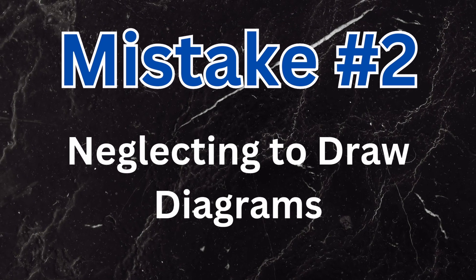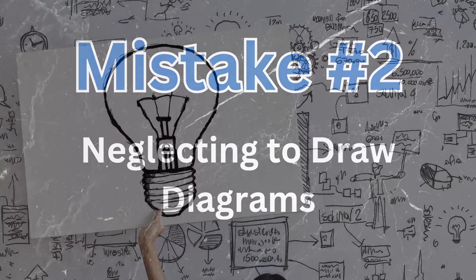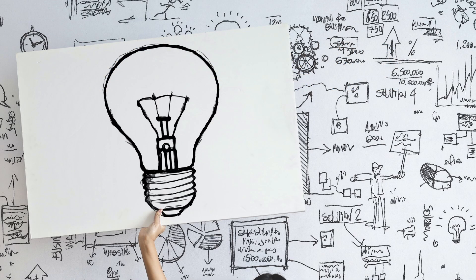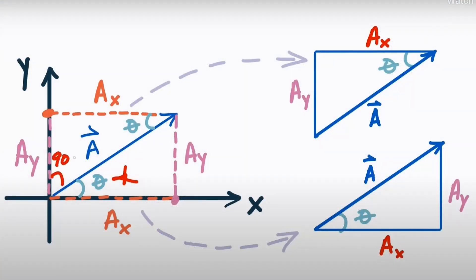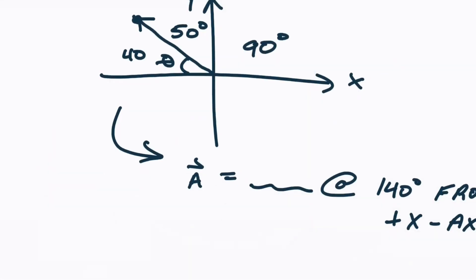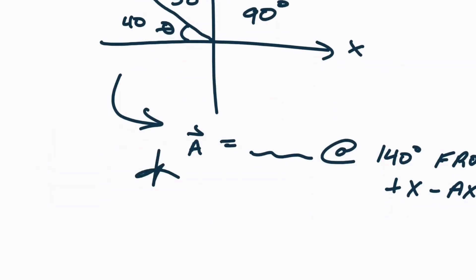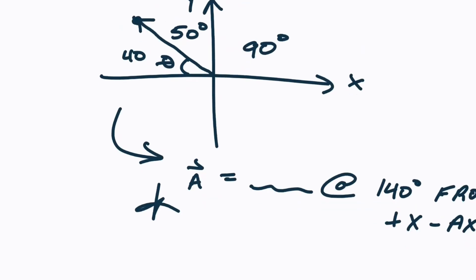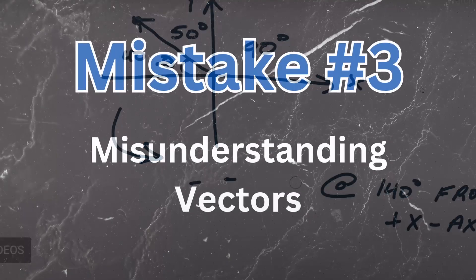Next up, we got neglecting to draw diagrams. Physics problems often involve multiple parts or elements interacting in a complex way, and so when you fail to draw a diagram, you're really failing to give yourself the benefit of being able to visualize the entire problem. Not drawing a diagram can really throw off your summation equations when you actually get around to applying Newton's second law to solve your problem.